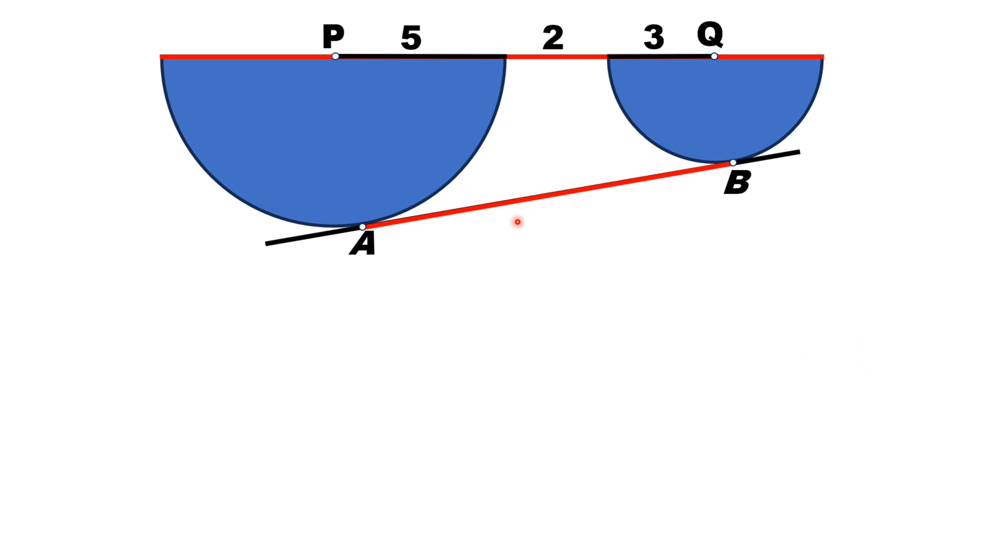Let's move towards the solution and modify the figure. Let's draw a line segment PA, which is actually the radius of this larger semicircle.